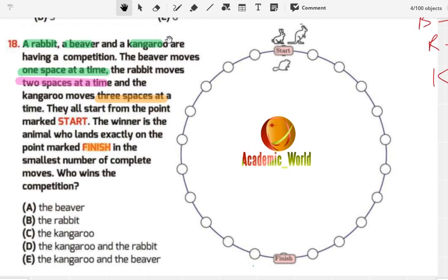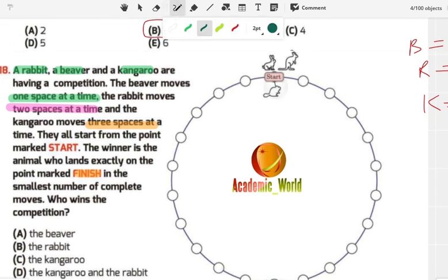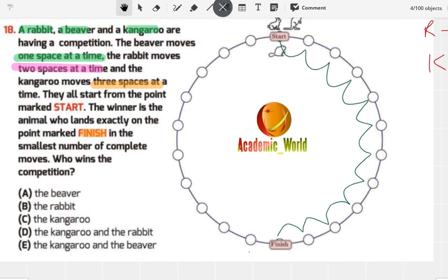Now I'm going to start with the beaver. The beaver moves one space at a time: one, two, three, four, five, six, seven, eight, nine, ten, and eleven. So in this case, I'm going to write the jumps: one, two, three, four jumps, five, six, seven, eight, nine, ten, and eleven. There are total eleven jumps in which the beaver reaches the finish line.